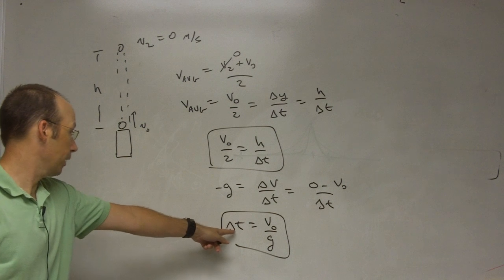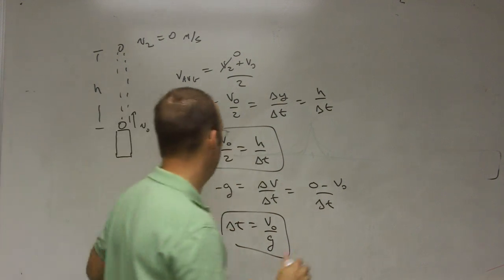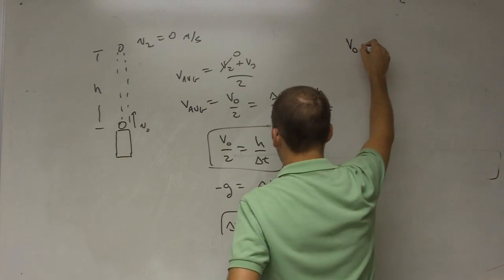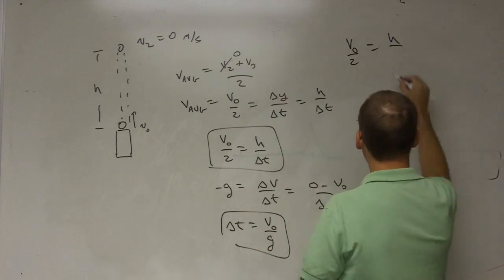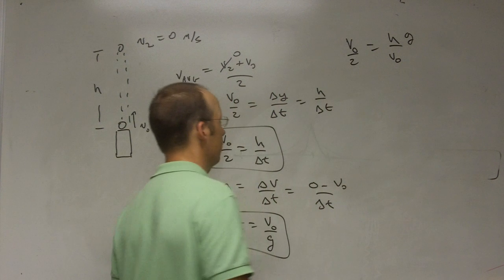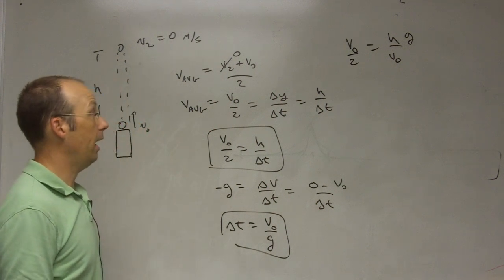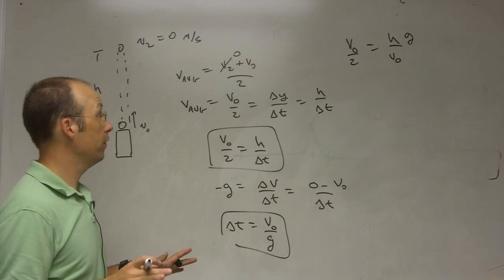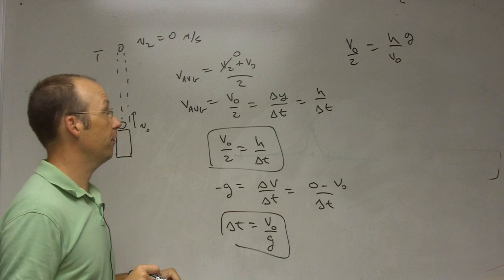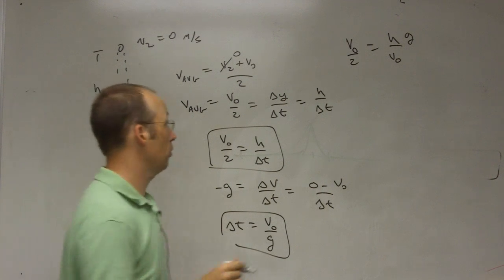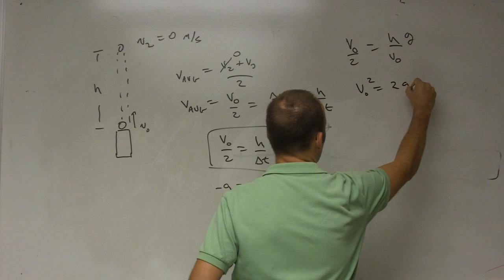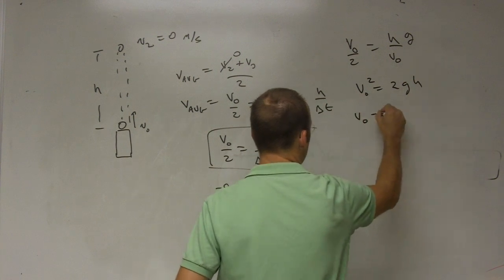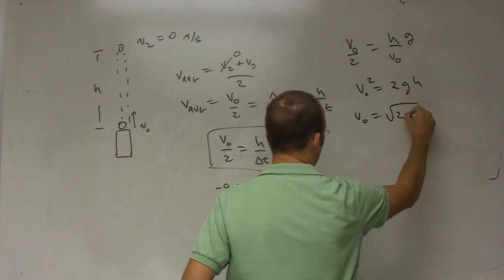Now I can plug that in down here, and I get v0 over 2 equals h over v0 times g. So I get that. And now I want to solve for v0. So I multiply both sides by v0, multiply both sides by 2, I get v0 squared equals 2gh. v0 equals the square root of 2gh.